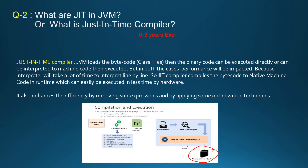You get the output easily. JIT also enhances efficiency by removing sub-expressions and applying certain optimization techniques. It creates native machine code during runtime. This makes Java programs execute faster, just like other programming languages like C and C++, which also compile down to native code.